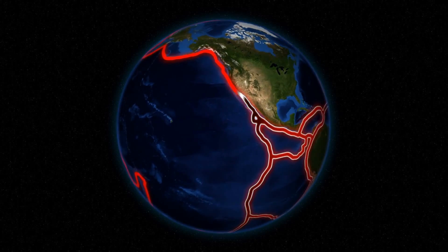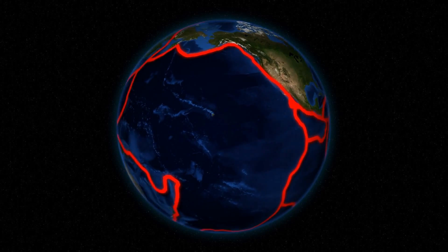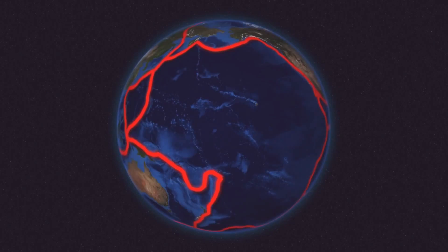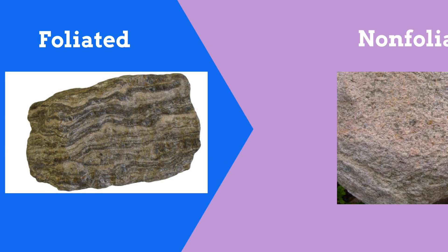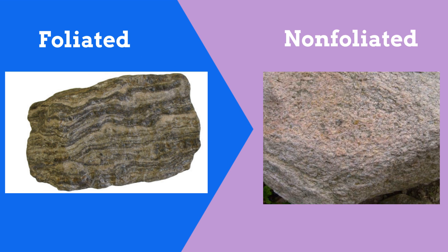Two major types of metamorphic rocks are foliated rocks, which have crystals in stripes, and non-foliated, which do not have crystals in stripes. So let's take a look at some common metamorphic rocks.